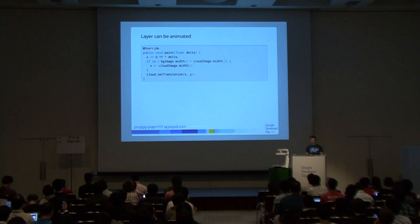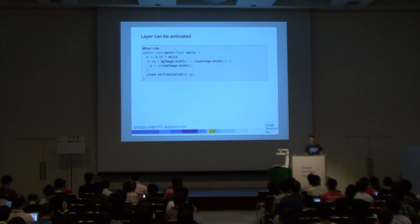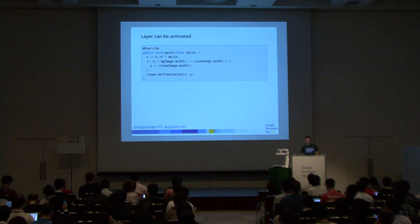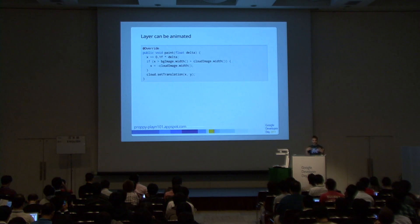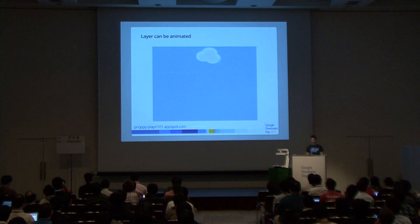But that's not very fun, so we animate the cloud. We override the paint function, and inside it we receive the delta — the time elapsed since the last paint call. We keep incrementing the cloud's x position, and if it goes off screen we send it back to the left. We update the cloud's translation to apply the transformation — and now we have a moving cloud.